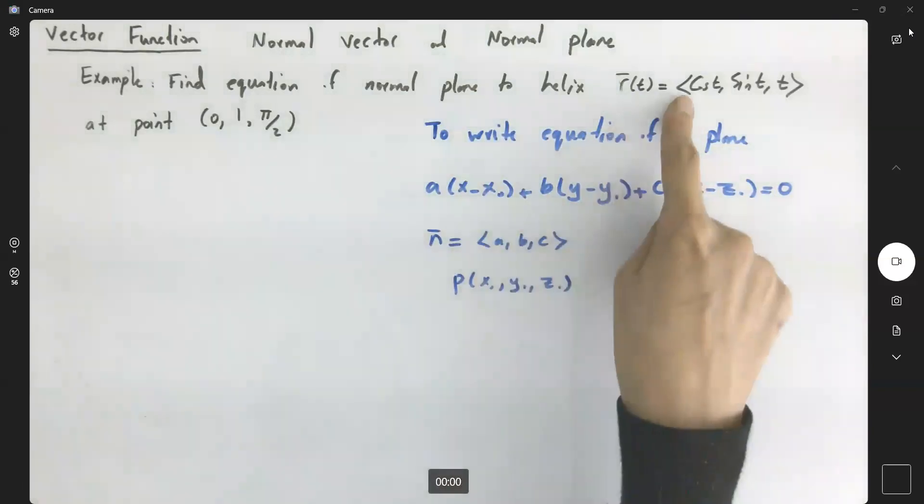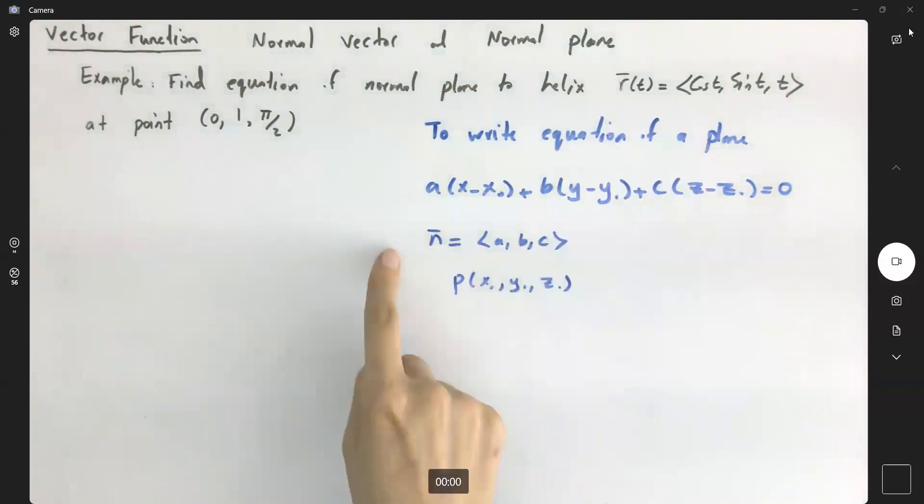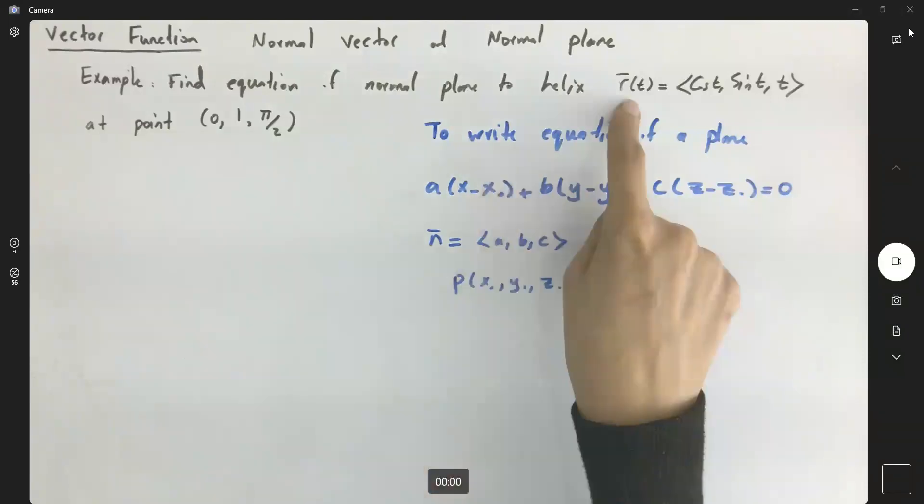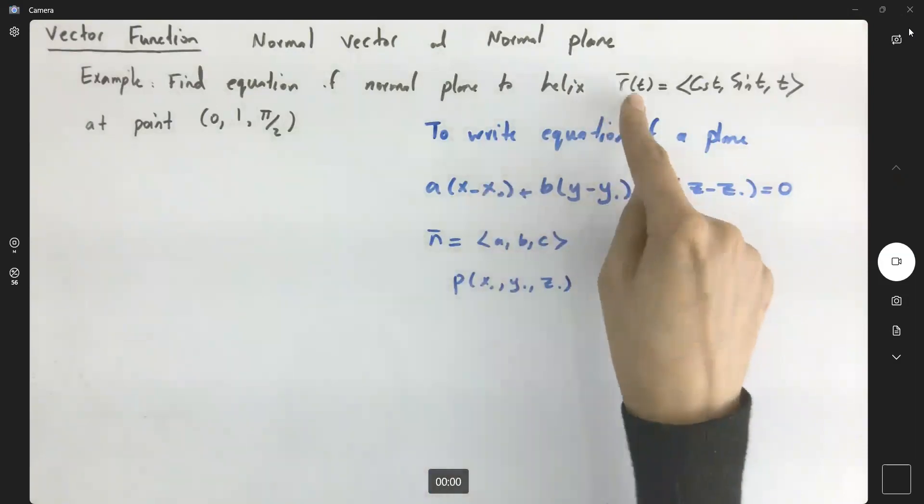In that case, when the helix is given to you to find the normal plane and finding the normal vector, you just need to find the derivative of your curve and plug in the appropriate t value.